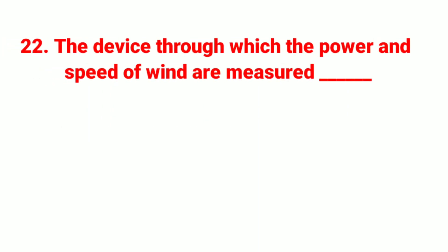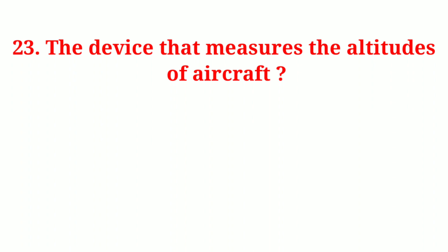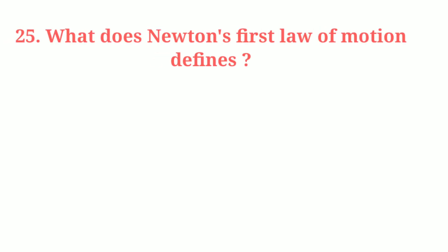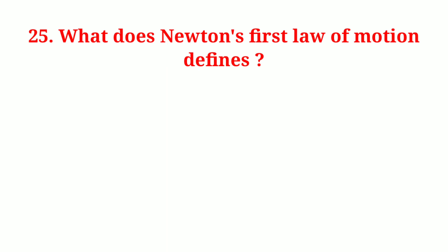The device through which the power and speed of wind are measured? Answer: anemometer. The device that measures the altitudes of aircraft? Answer: altimeter. The device used to measure atmospheric pressure? Answer: barometer.